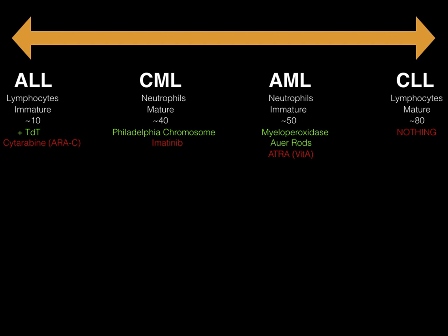For treatments: ALL, you give cytarabine, also known as Ara-C. For CML, you give imatinib, a tyrosine kinase inhibitor. The problem in chronic myeloid leukemia is that a tyrosine kinase is overexpressed — the translocation of 9-22 turns that tyrosine kinase on indefinitely, causing cancer. So the goal is to turn it off with imatinib. You could get a question asking which drug is a tyrosine kinase inhibitor — the answer is imatinib, because it treats CML by blocking the overexpressed tyrosine kinase from the Philadelphia chromosome translocation.